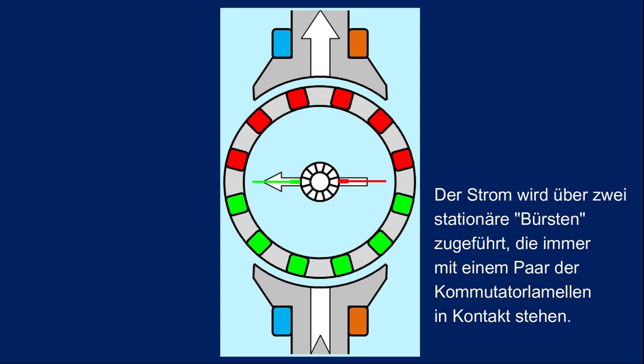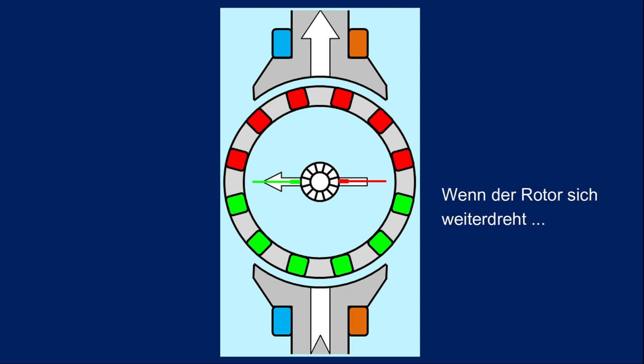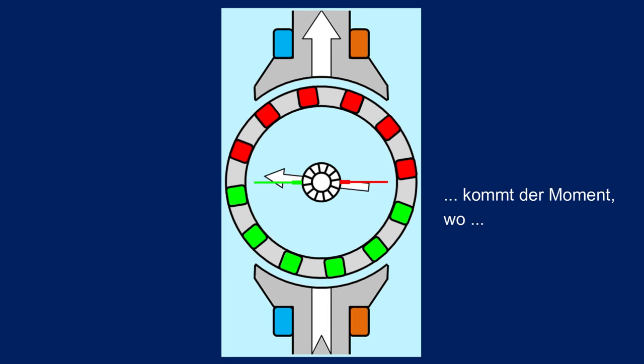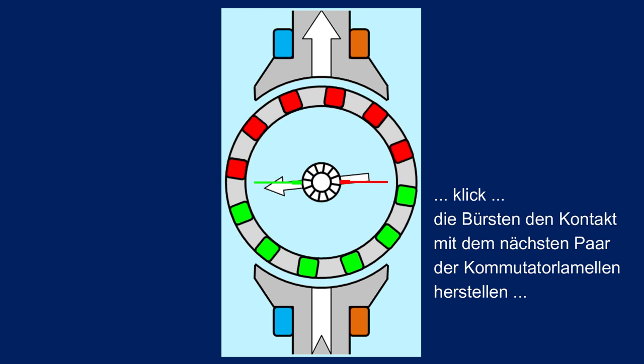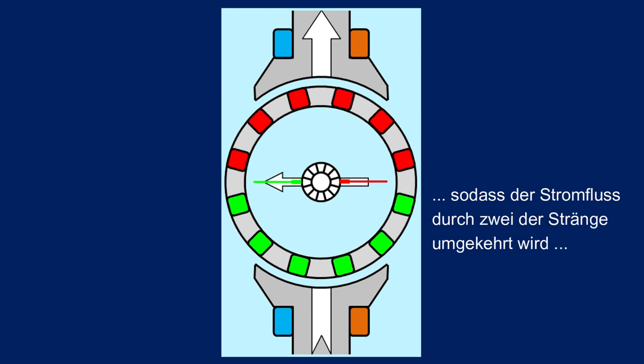The current is supplied to the winding strands by means of two stationary brushes which are always in contact with one pair of commutator bars. When the rotor keeps turning, there comes the moment when the brushes make contact with the next pair of bars so that the current flow through two of the winding strands is reversed and the magnetic field sort of jumps one step back. This can go on endlessly as I will show you.